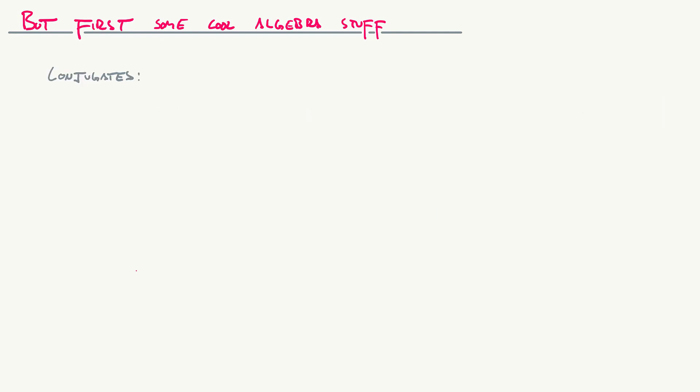The other thing we can talk about are conjugates. If you have the sum of two expressions a and b, the conjugate of (a + b) is (a − b). Conjugates come in pairs — the sum and difference of the same two terms. When you multiply conjugates together you get a difference of squares: (a + b)(a − b) = a² − b².